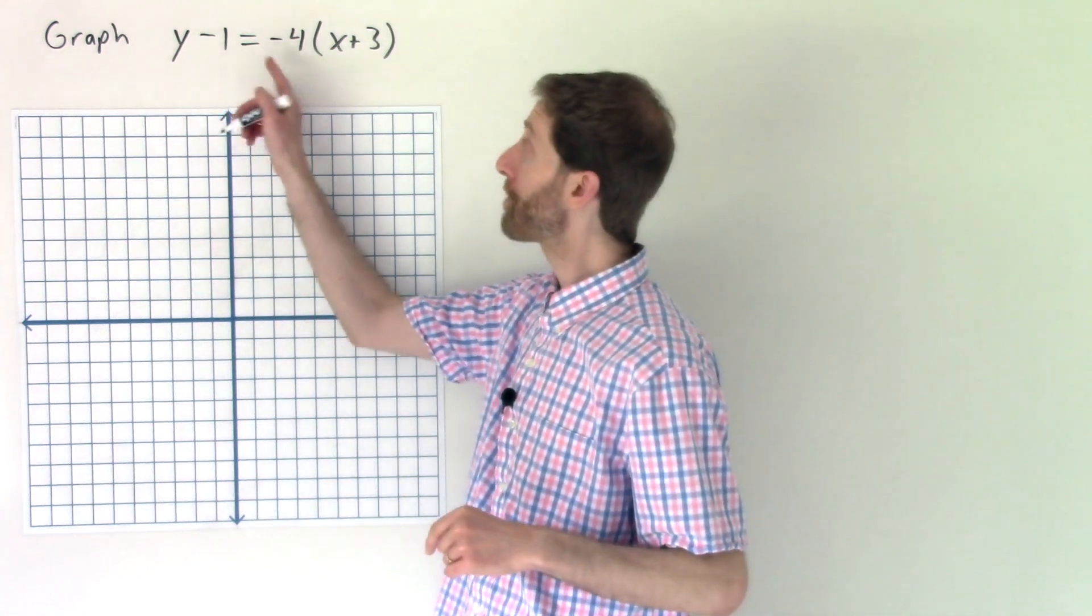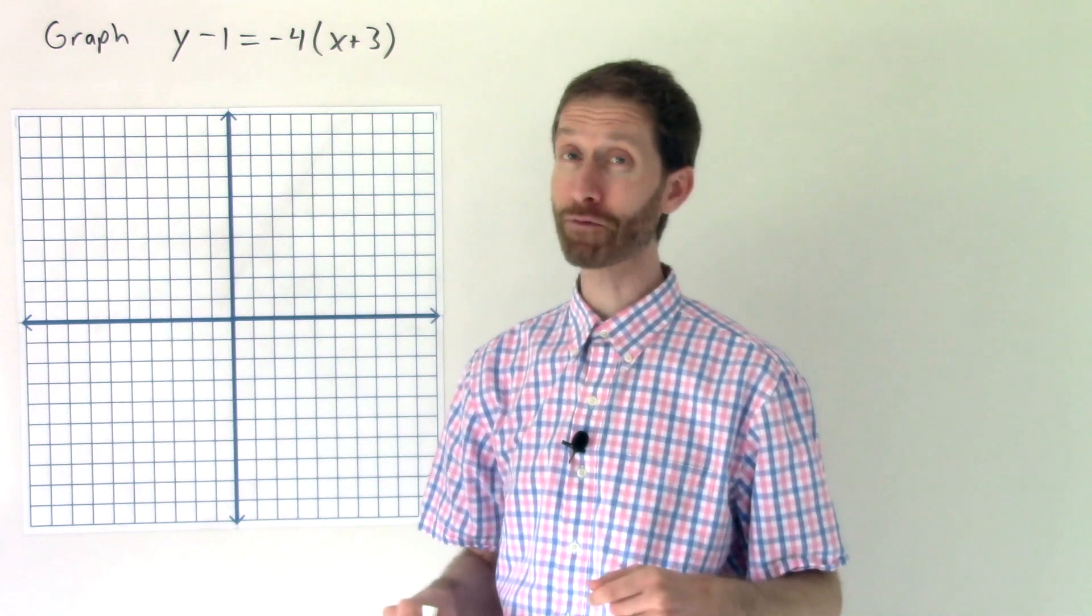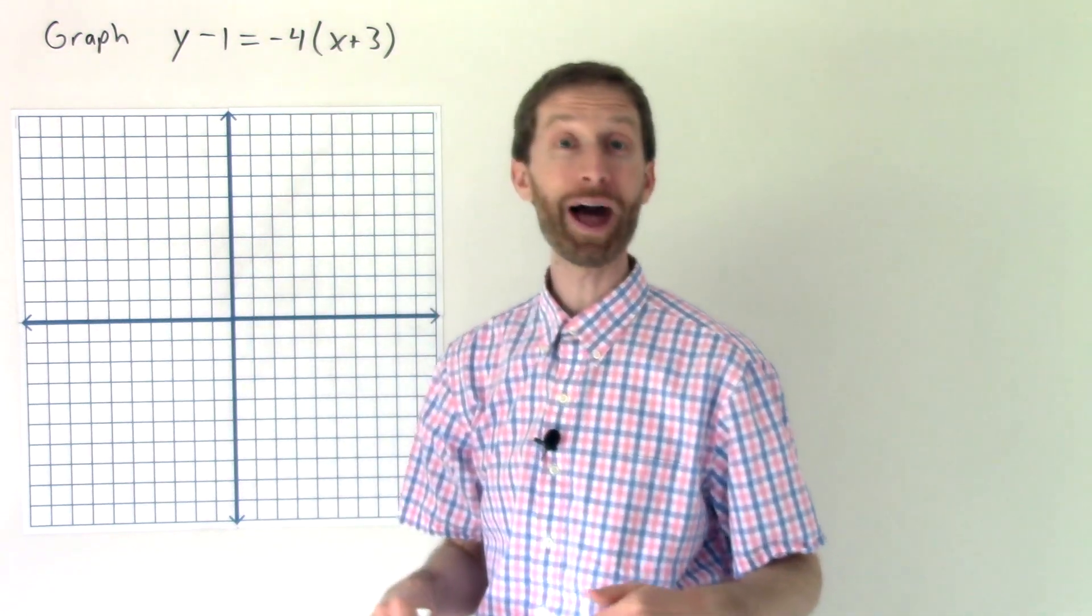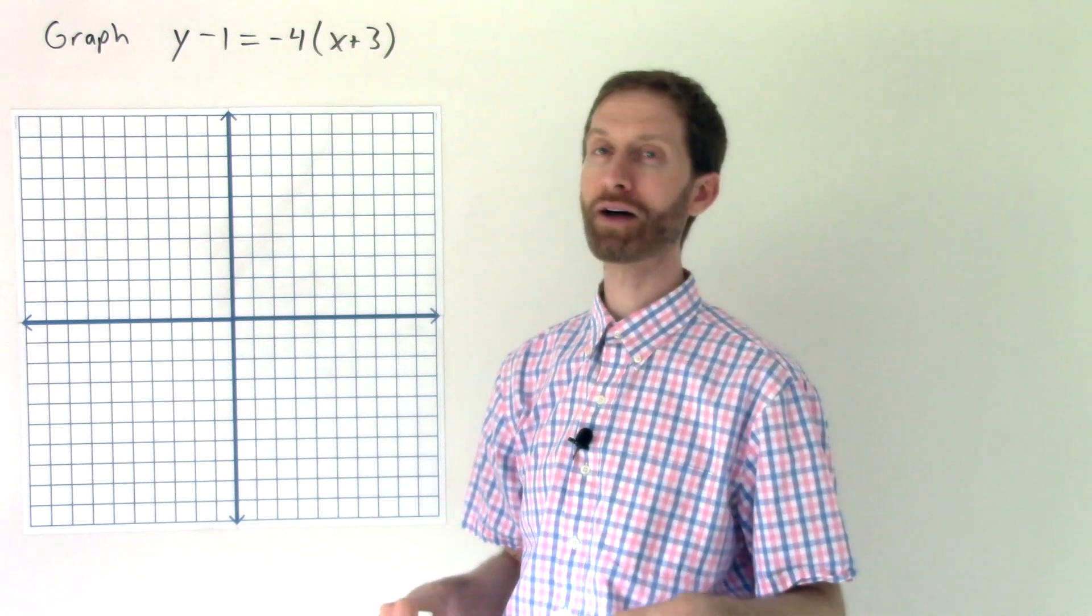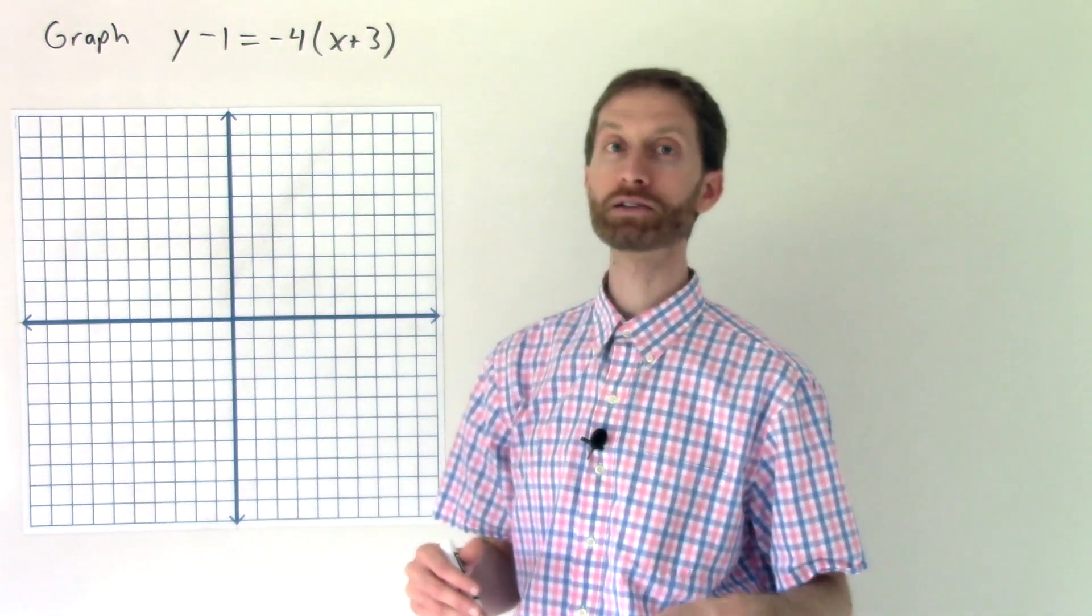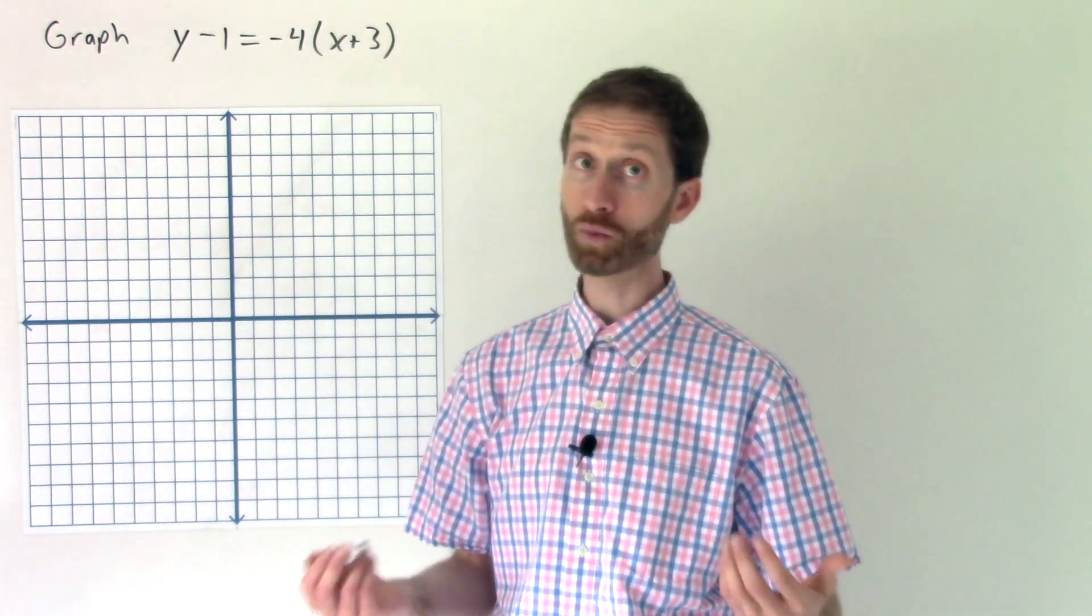We're told to graph y-1 equals negative 4 times x plus 3. So how in the wide world of math do we graph that? Well, we break it down based on the information that we're given, and we graph that information.